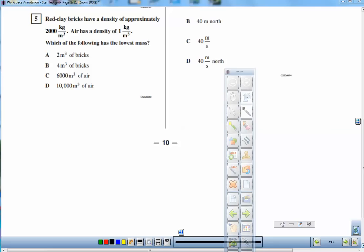For this problem, we have red clay bricks with a density of about 2,000 kilograms per cubic meter, and air has a density of 1 kilogram per cubic meter, which has the lowest mass of all these four possibilities.